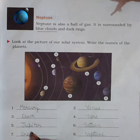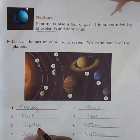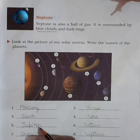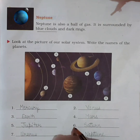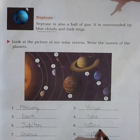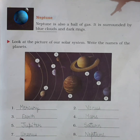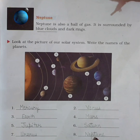The fifth planet is Jupiter — J-U-P-I-T-E-R — the biggest planet of the solar system. The sixth planet is Saturn — S-A-T-U-R-N. The seventh planet is Uranus — U-R-A-N-U-S. The eighth and last planet is Neptune — N-E-P-T-U-N-E.